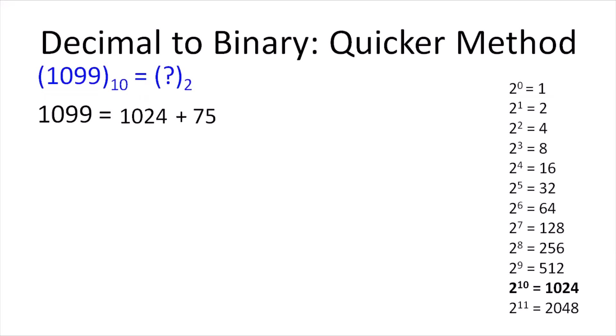Next, we find the highest power of 2 which is less than 75, which in this case is 64. So we again split 75 as 64 plus 11.